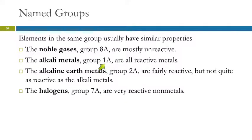Group 2A, those are called the alkaline earth metals. They're quite reactive but not as much as the alkali metals. And then the other named group is the halogens and that's group 7A. Those are non-metals and they're also very reactive. You should know those names.